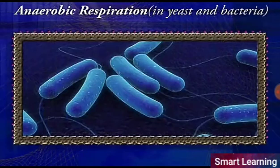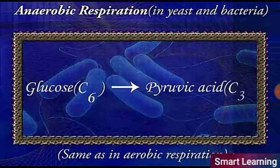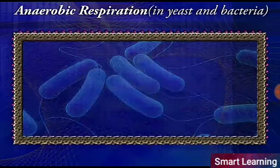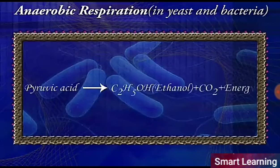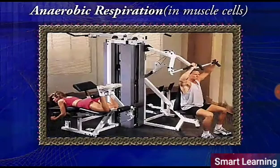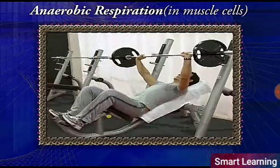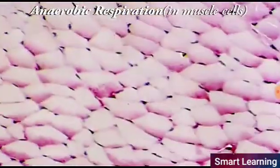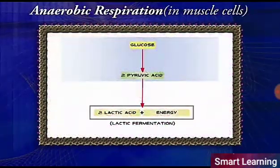In anaerobic respiration, the first step of glycolysis is the same as in aerobic respiration. In certain anaerobic microorganisms, the pyruvic acid thus obtained is converted into ethanol, carbon dioxide, and energy. Anaerobic respiration also occurs inside the muscle cells during vigorous activities when oxygen is scanty. At such instances, the pyruvic acid breaks down into lactic acid and energy.